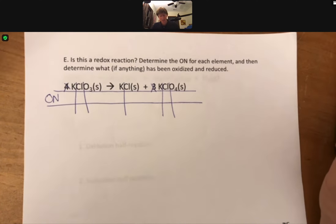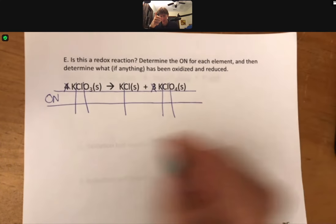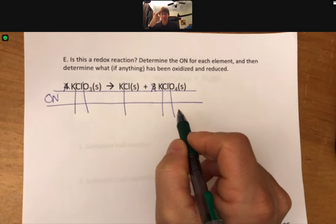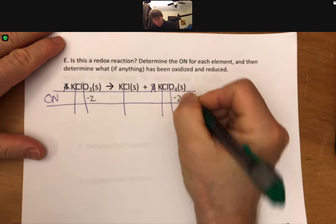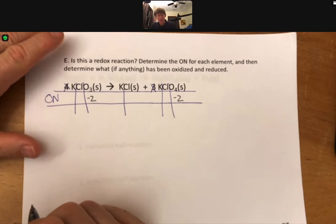Just trying to remember the rules myself here. Hydrogens plus one, we have no hydrogens. Oxygen's minus two, minus two, minus two.